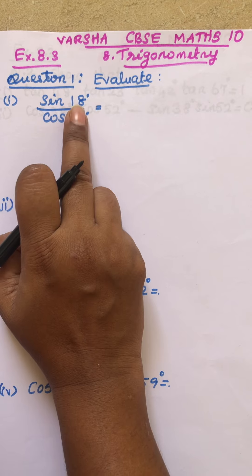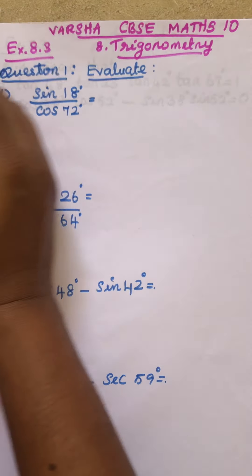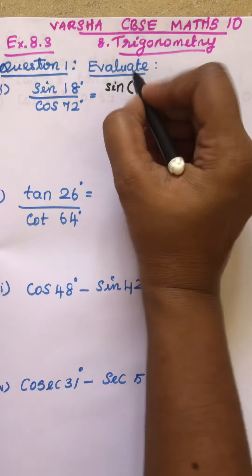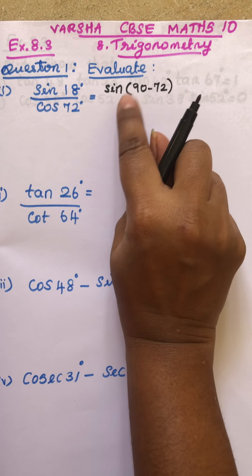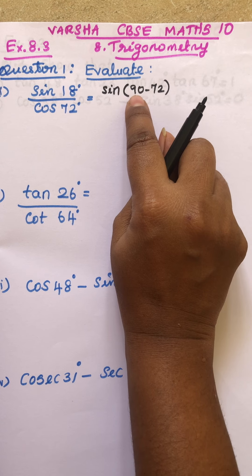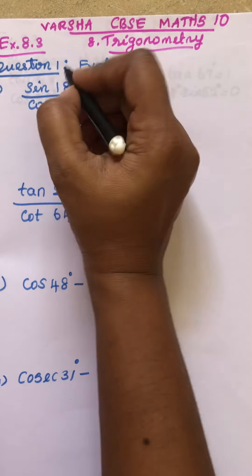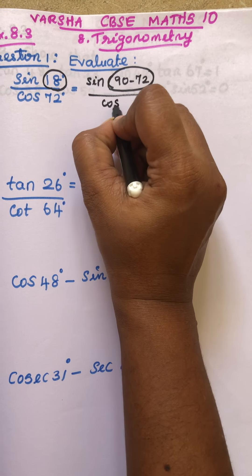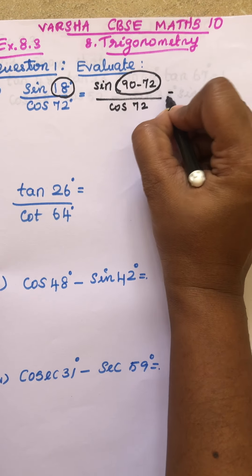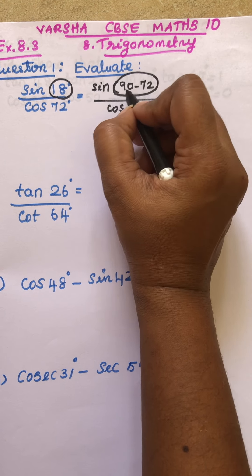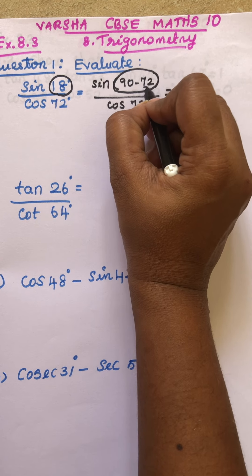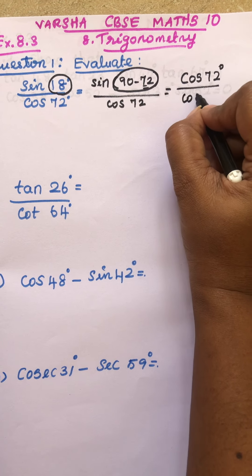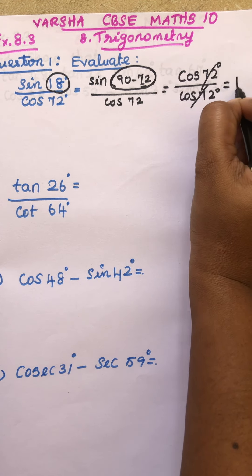For the first question, sin 18 can be written as sin(90 minus 72), because 90 minus 72 equals 18. So we write sin(90 minus 72) divided by cos 72. Using the formula sin(90 minus θ) equals cos θ, where θ is 72, this becomes cos 72 by cos 72. You can cancel, so you get the answer 1.